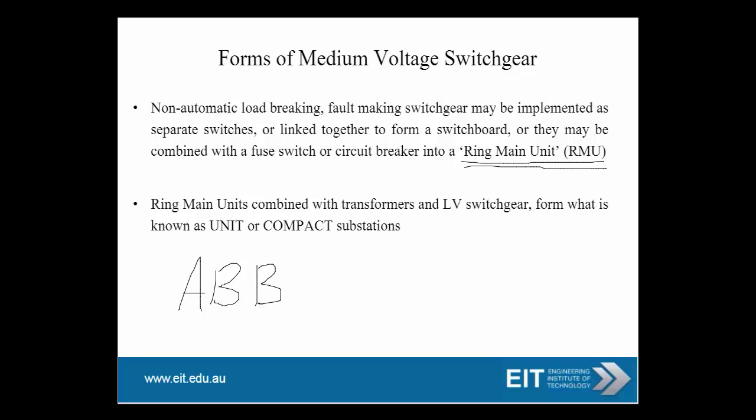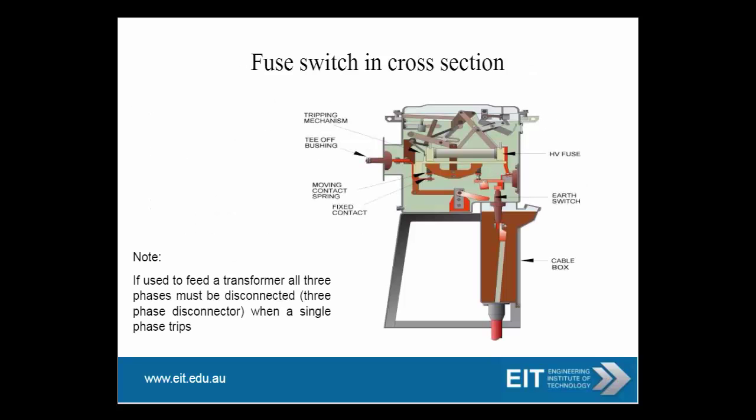On the high voltage end of compact substations, you have your ring main unit. If a switch has to feed a transformer, you can't just rely on the switch for protection — you need a fuse. Internally, the fuse acts as a protection mechanism for the transformer. The benefit of this fuse is that it gives you three-phase tripping: if there is an overload on one phase and that fuse blows, the tripping mechanism trips the other two phases so all three phases open. This prevents single phasing — when one phase blows, all three phases open.